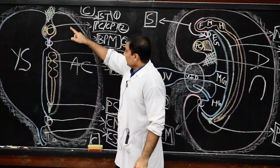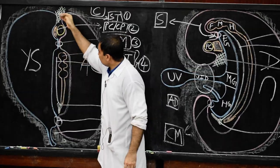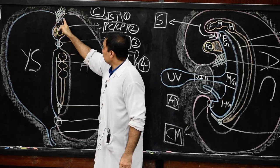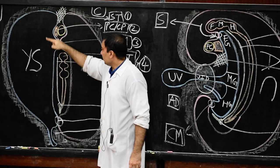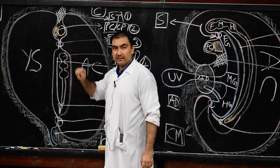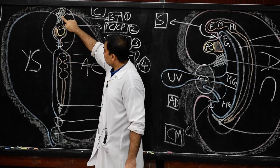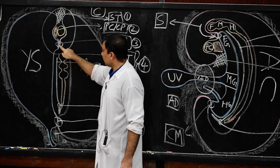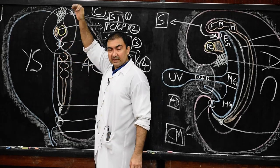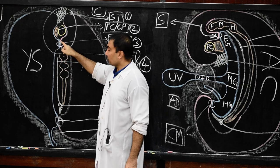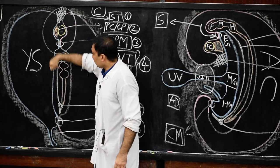Before the head fold, septum transversum was the most cephalic portion. After the head fold, because of cephalic folding, the septum transversum comes to lie in the most caudal direction — below the buccopharyngeal membrane and below the pericardial cavity. So: before head fold, order is septum transversum → pericardial cavity with cardiac plate → buccopharyngeal membrane. After head fold: buccopharyngeal membrane is most cephalic, pericardial cavity with cardiogenic plate is below it, and septum transversum comes below that.